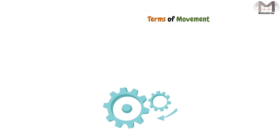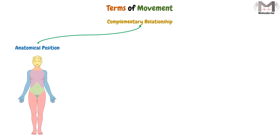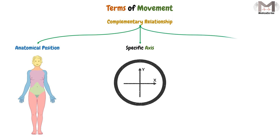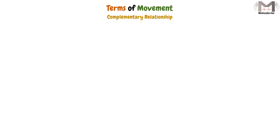In general, most movements that the human body performs are complementary relationships in nature, combining the anatomical position with a specific axis and a specific plane relative to the structure. This occurs in order to perform the movement efficiently. And this complementary relationship is mostly seen in the joints.